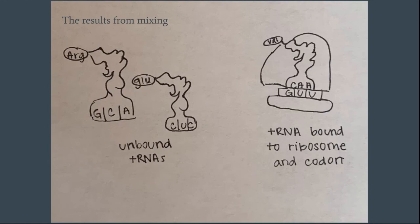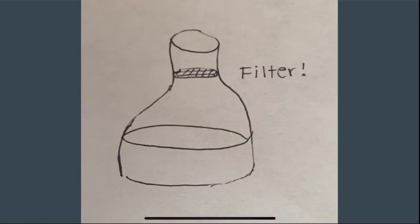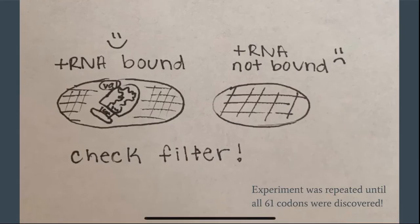They repeated this with a different radioactive amino acid each time to see if it would bind to the ribosome. If the tRNA is bound to the ribosome, then the compound was caught by the nitrocellulose filter paper. If the tRNA did not bind, it would pass through the filter.